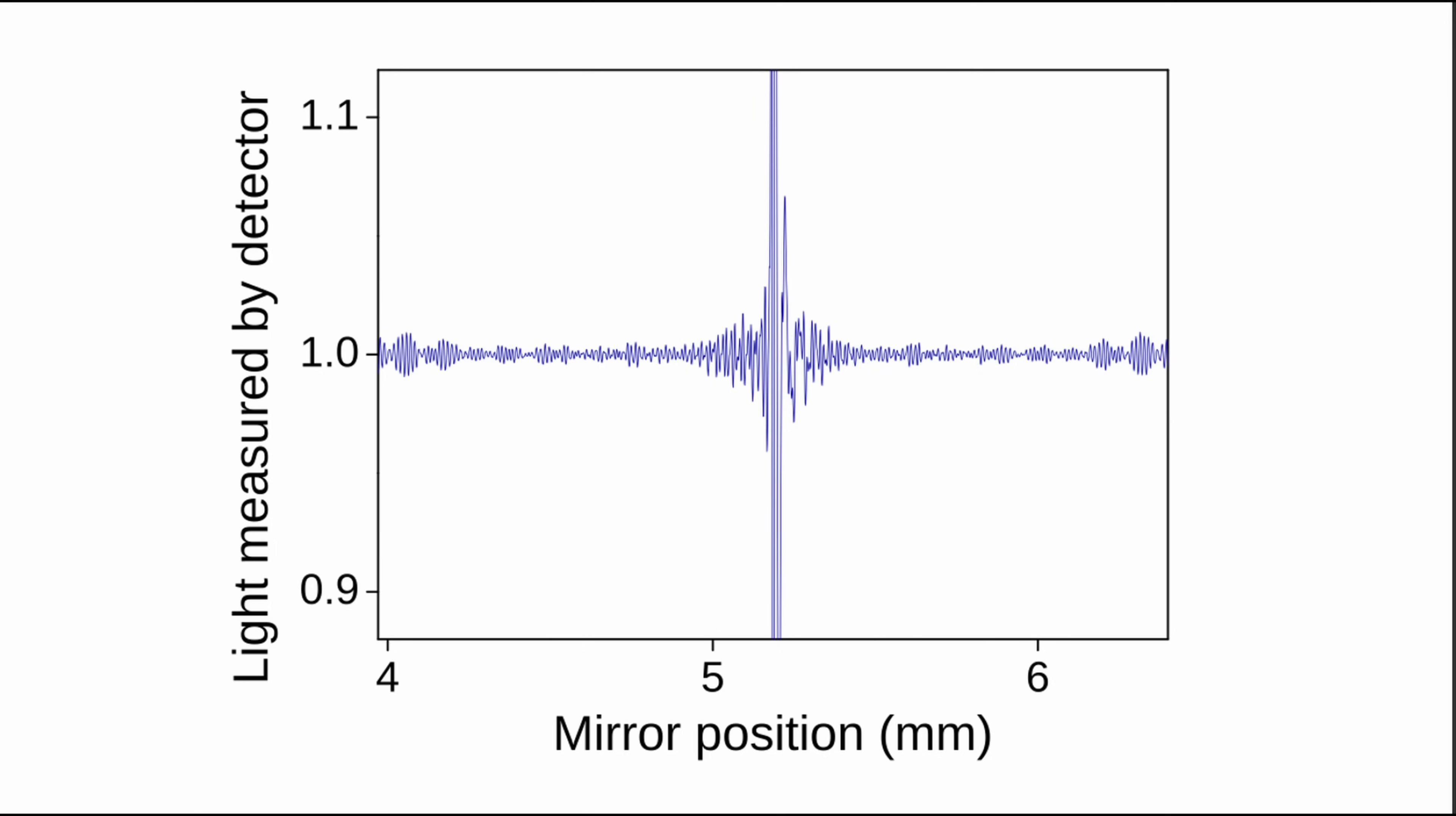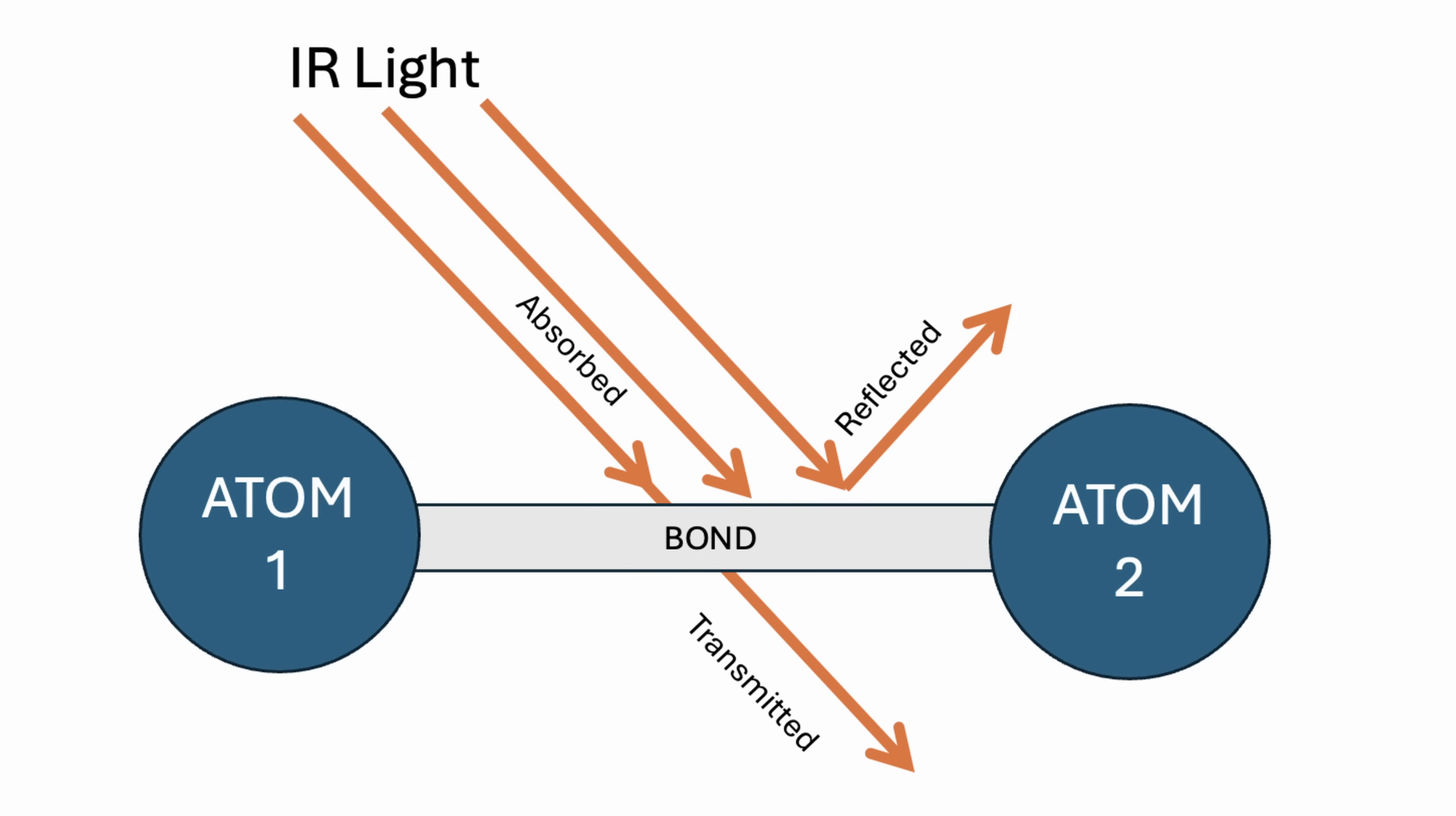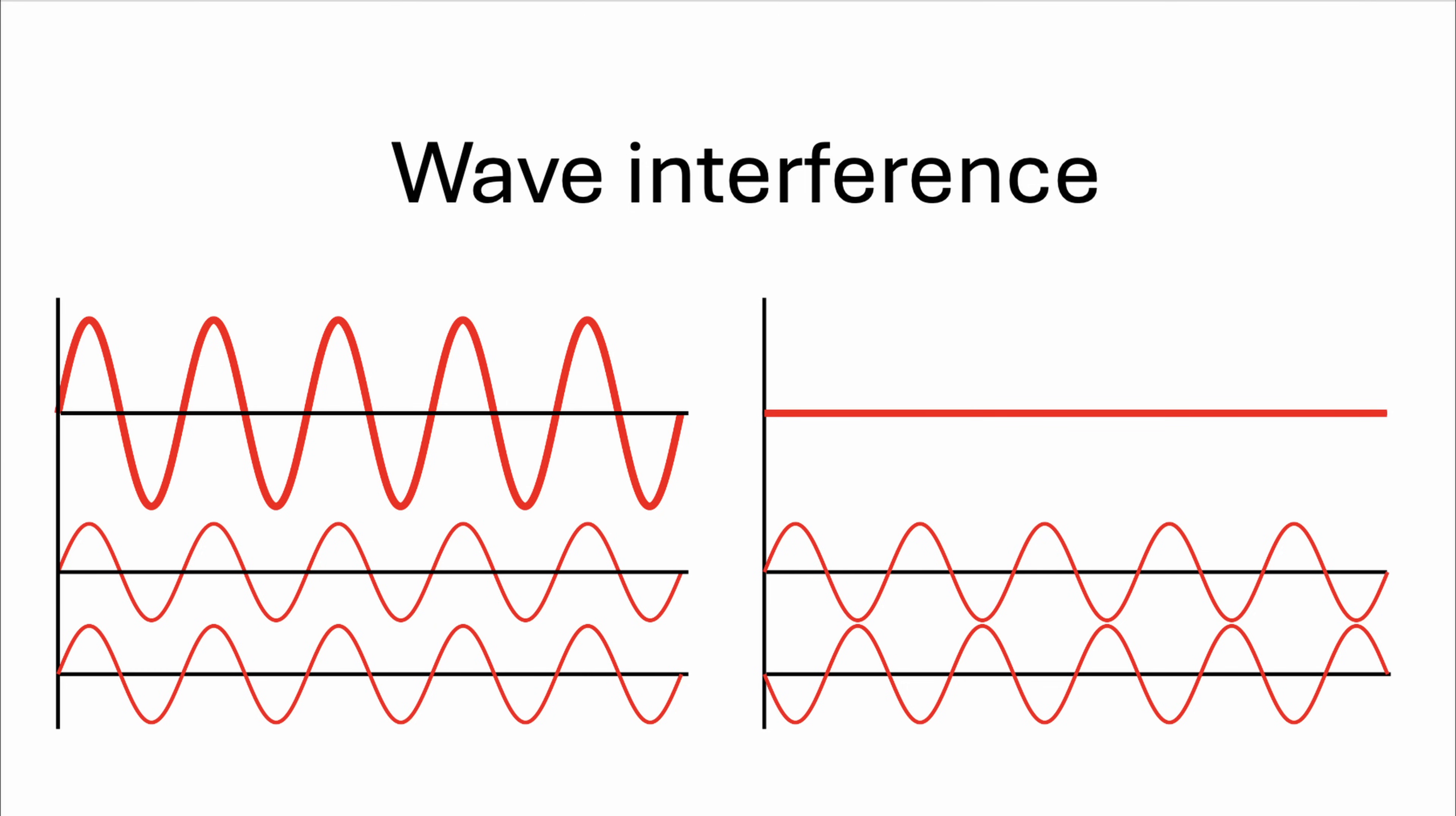This combined fluctuating signal recorded over time or mirror position is called the interferogram. The interferogram is essentially a detailed record of how the different wavelengths in the IR beam interfere at different path length differences. When the combined IR beam passes through the sample, molecules within the sample selectively absorb certain wavelengths of infrared radiation. Each absorbed wavelength is effectively removed from the recombined IR beam. This selective absorption causes distinctive changes in the interferogram. Certain wavelengths that would otherwise contribute to interfere in the pattern are reduced or missing entirely, creating a characteristic alteration in the interferogram that encodes information about the sample's molecular structure.